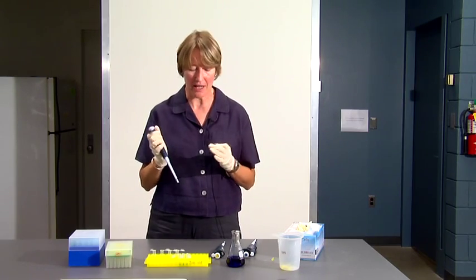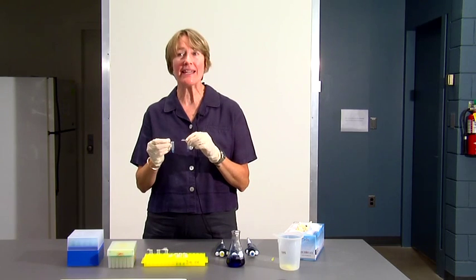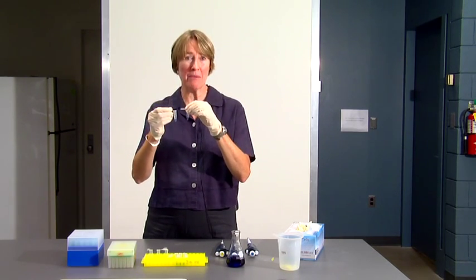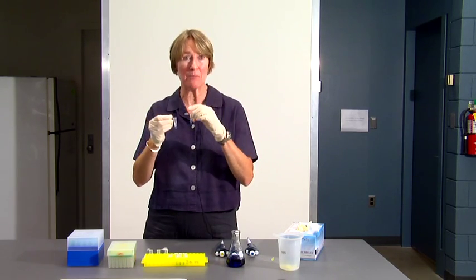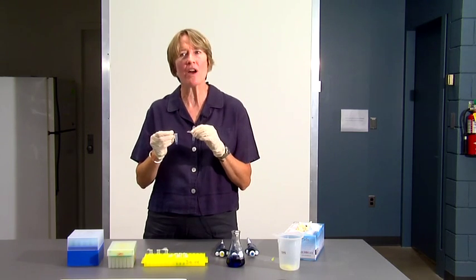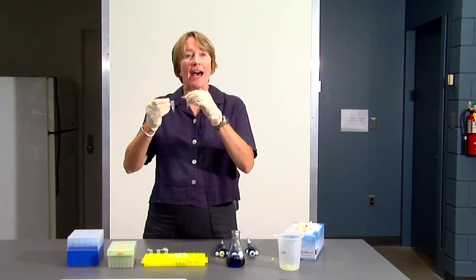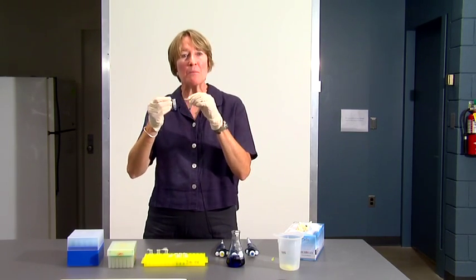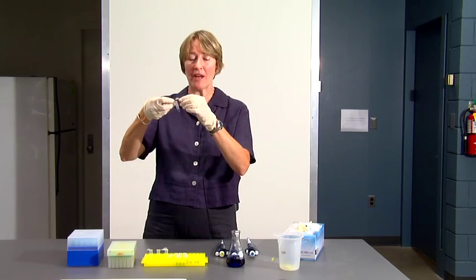Something that biologists often do when they're pipetting is they look at what they're pipetting and they check to make sure that they've pipetted the right amount in the tip. In other words, once I've pipetted 100 microliters over and over, I know what 100 microliters looks like in the tip. So, I should be checking the tip to make sure that there are no bubbles and that we have 100 microliters in the tip.